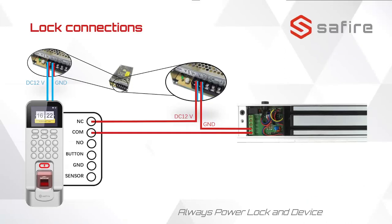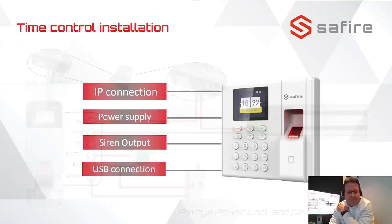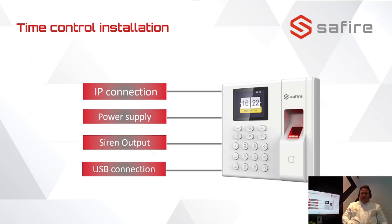Here's a little sample of how you should connect the lock, how to connect the sensor and the push button to the lock. Here we have the time control unit that has the IP connection, power supply, and an unarmed output. In case you ever need to use it, you know that it's there.